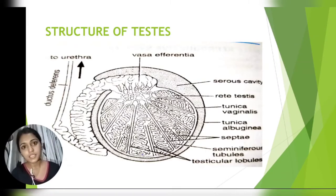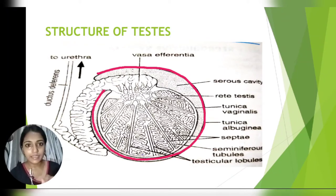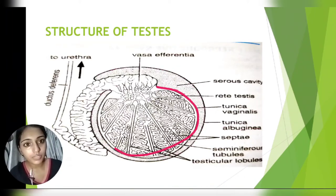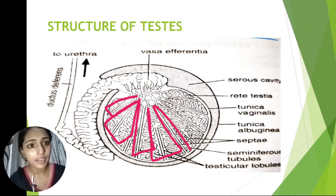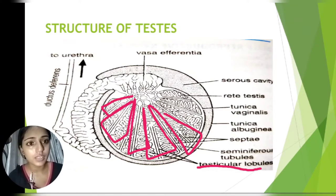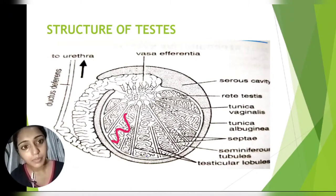Now let us see the structure of the testes. The testes are externally lined by a fibrous lining called tunica albuginea, and the internal lining of the testes is called tunica vaginalis. The testes internally contain about 250 compartments, called testicular lobules, and inside these compartments there are coiled tubules called seminiferous tubules.